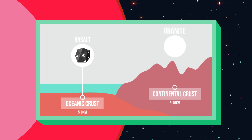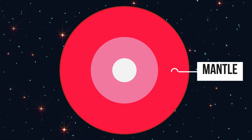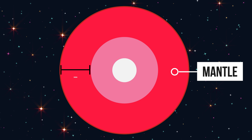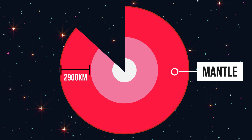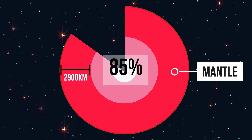The other part is the continental crust, which is what we live on. This varies from around 8 kilometers to 70 kilometers and is largely made of another igneous rock called granite. The next layer is the mantle, mainly composed of silicate rock and minerals.